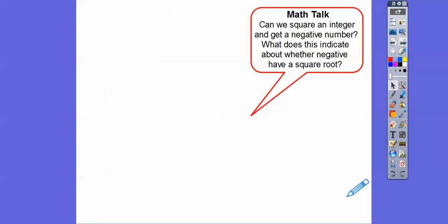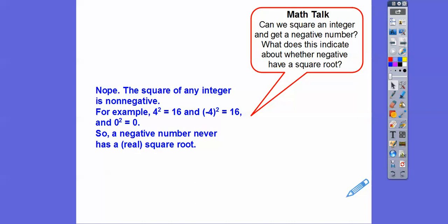Can we square an integer and get a negative number? No, we can't. The square of any integer is never negative — it's non-negative. For example, 4 squared is positive 16, negative 4 squared is also positive 16, and zero squared is zero. That's why we say non-negative. So when we square a number it's always positive or zero, which means a negative number can never have a real square root.